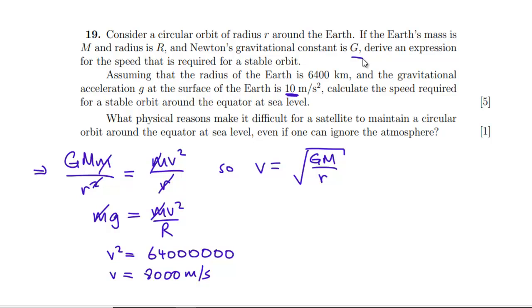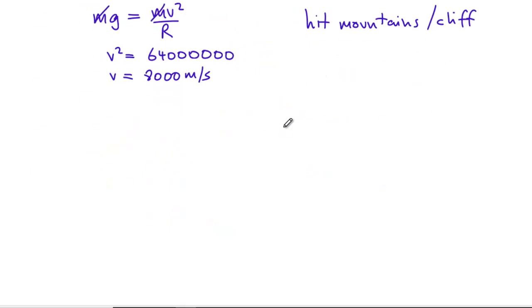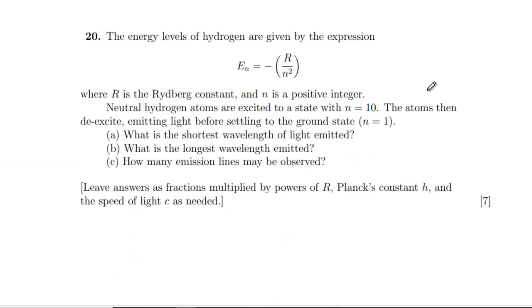What physical reasons make it difficult for a satellite to maintain a circular orbit around the equator at sea level? Well, it might hit things. It might hit a mountain. There you go. Hit mountains. There's got to be one somewhere, isn't there? If you're just going around at sea level, you ought to just hit a cliff somewhere, wouldn't you? So that's another question. A standard circular motion question, really. Not that much. Quite easy marks on that one.